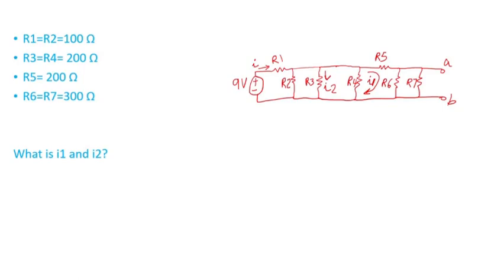We have R1, R2, R3, R4, R5, R6, and R7, and we want to find I1 and I2. Current I1 flows through R4 and I2 flows through R3.